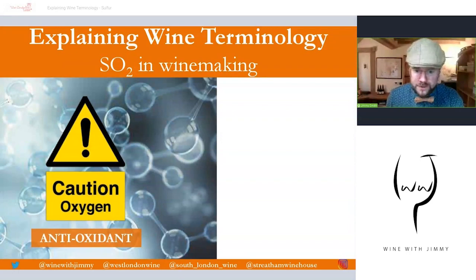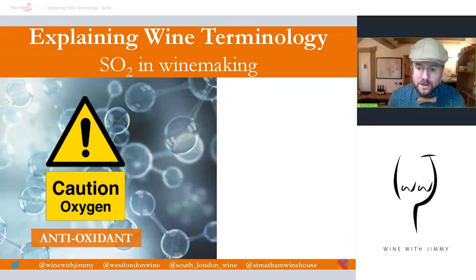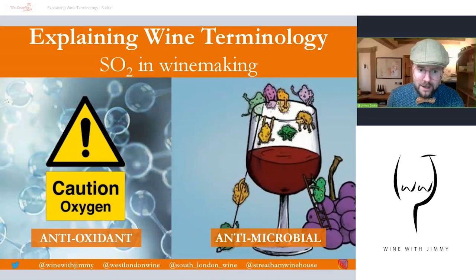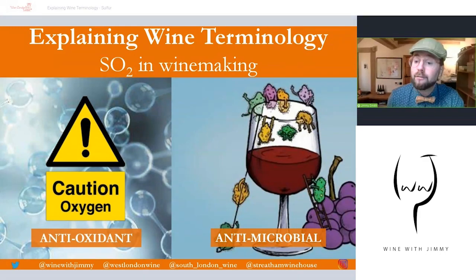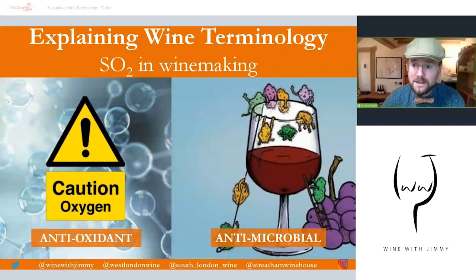Sulfur dioxide has two key properties in winemaking. First, as an antioxidant — it reacts with the products of oxidative reactions so they cannot further oxidize compounds in the wine, protecting it against oxygen. Second, as an antimicrobial — it inhibits the development of microbes such as yeast and bacteria. The major wine yeast strain, Saccharomyces, has good tolerance to it, while others may not. This protective environment prevents refermentation and bacterial spoilage.